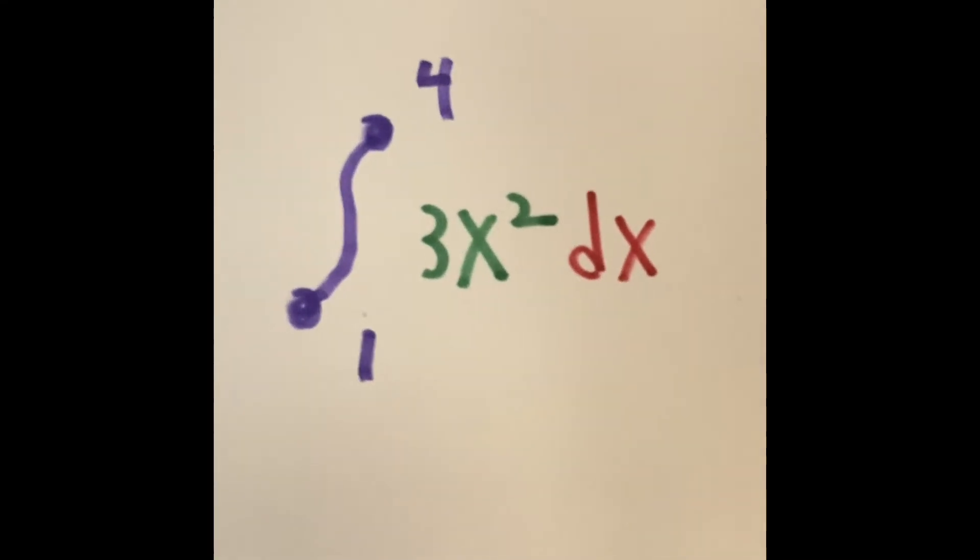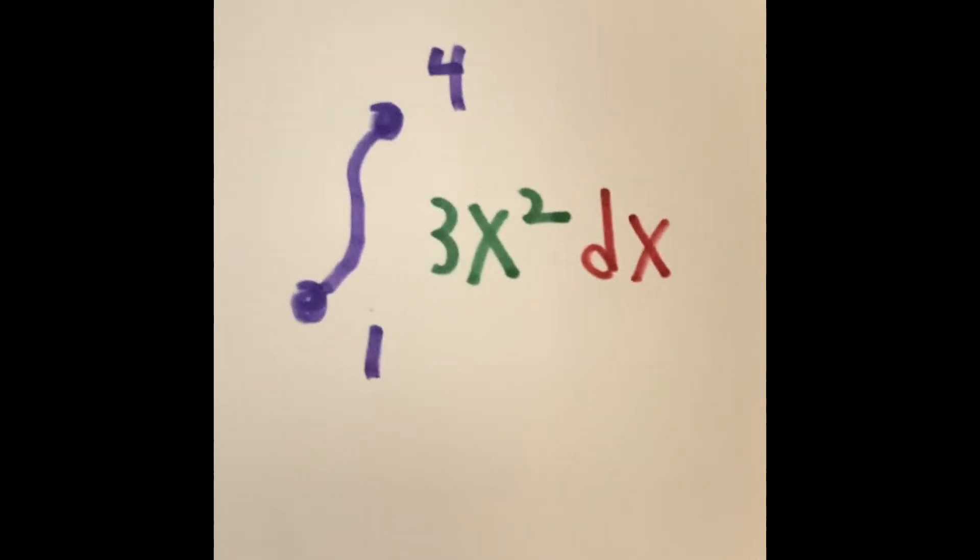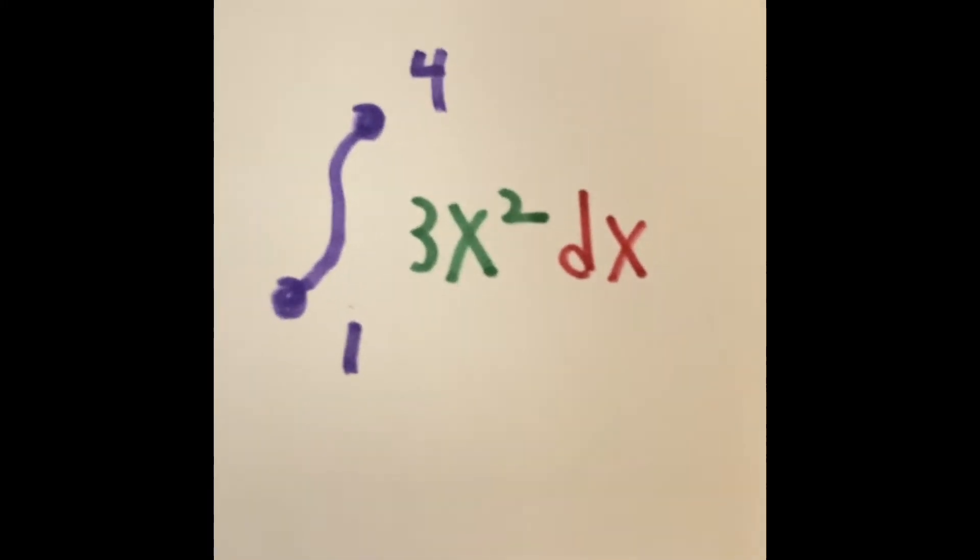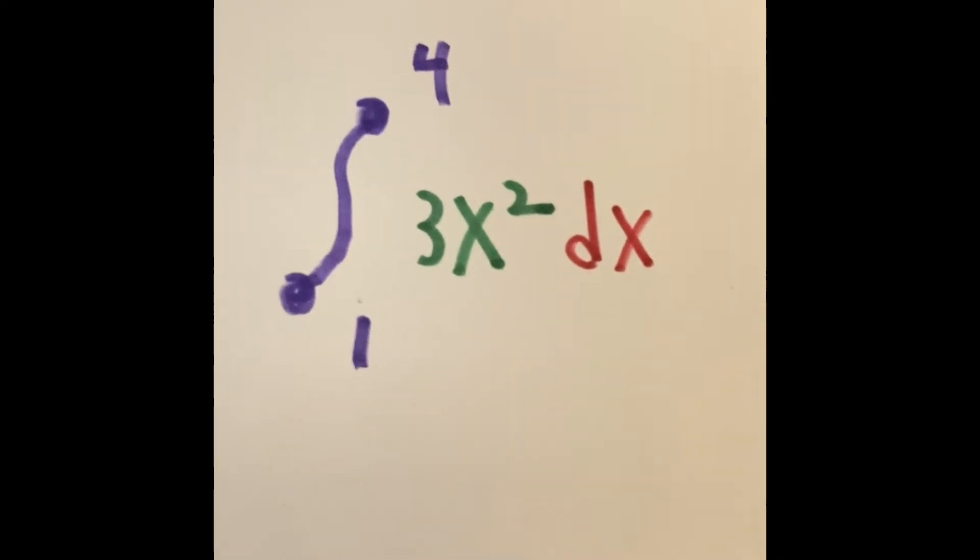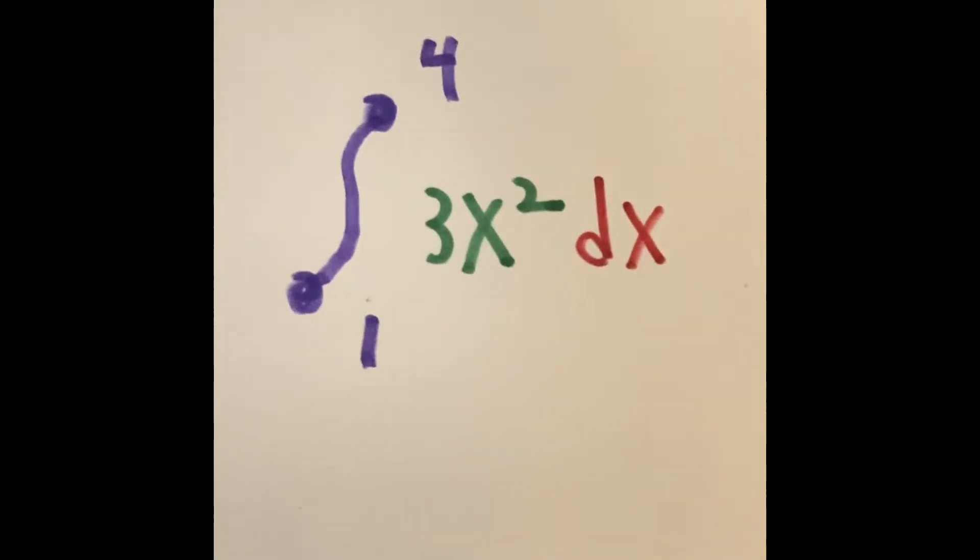So what is the area of that irregular shape? Well, we already know that it's a shape that cannot be identified with a formula, like the formula for a square, the formula for a triangle.